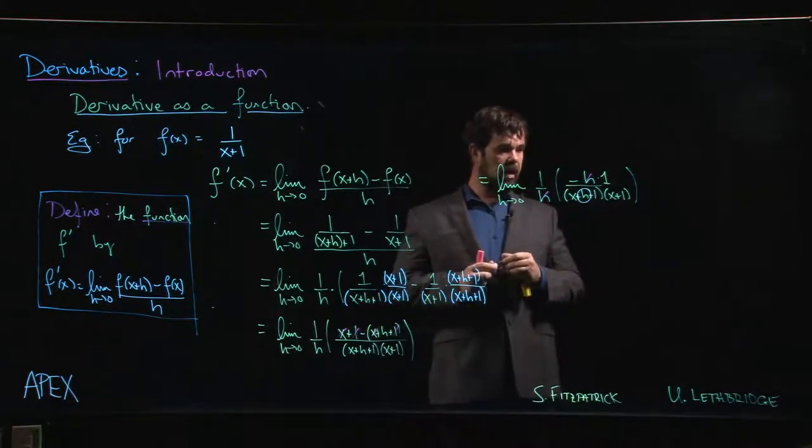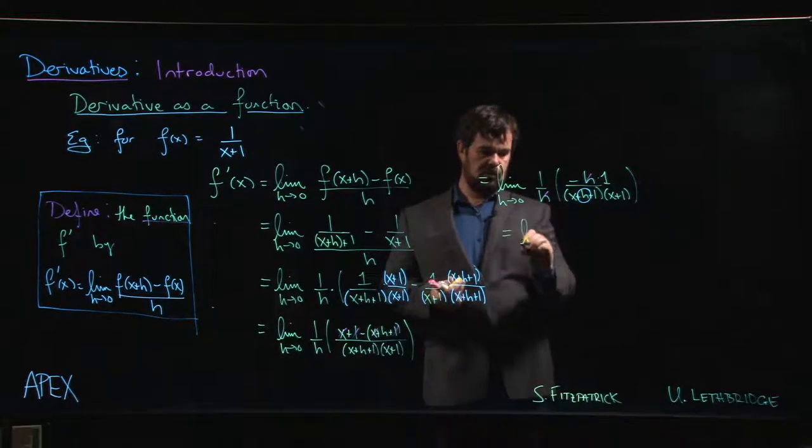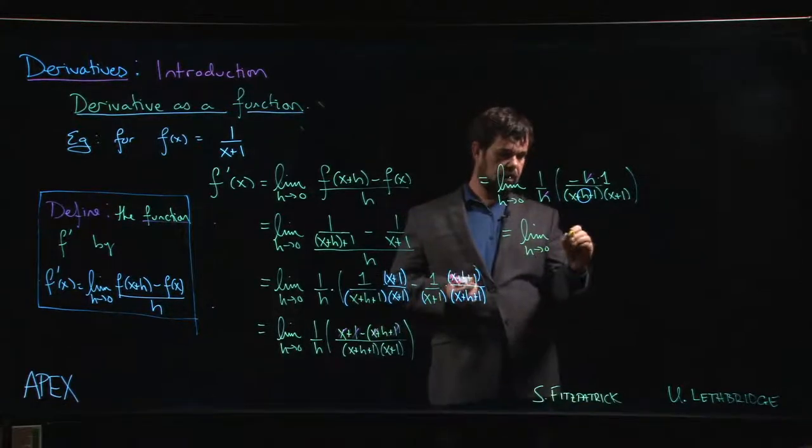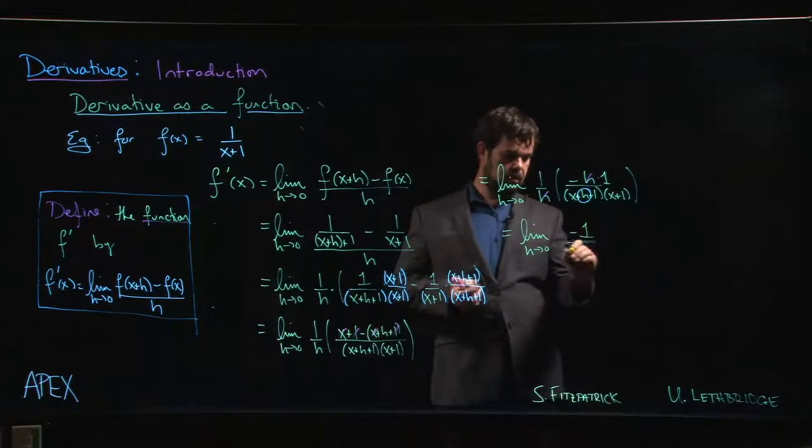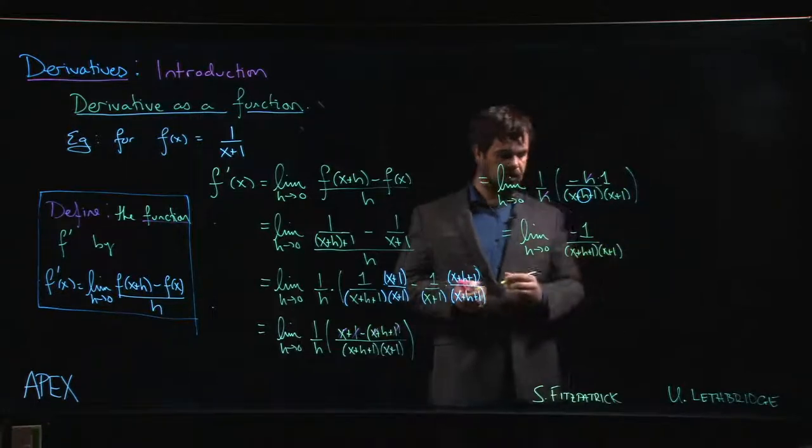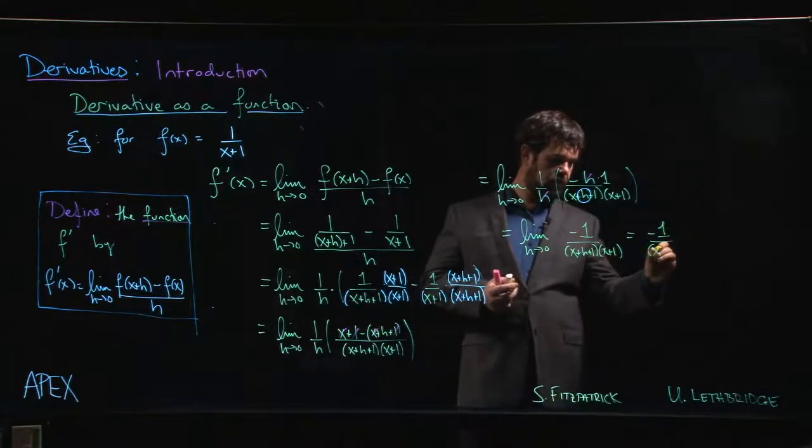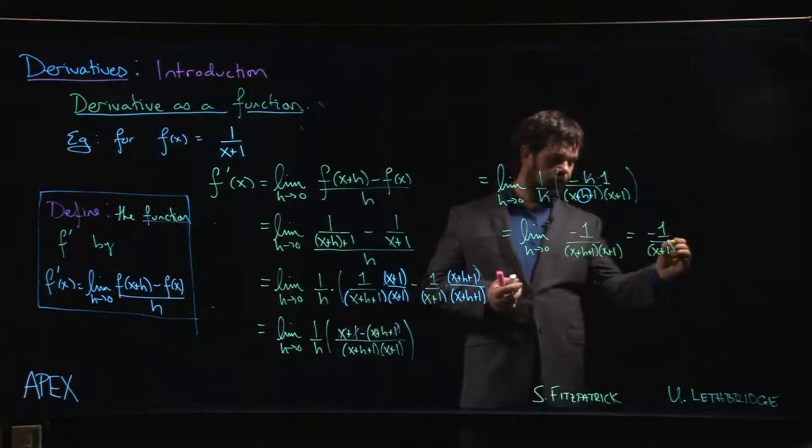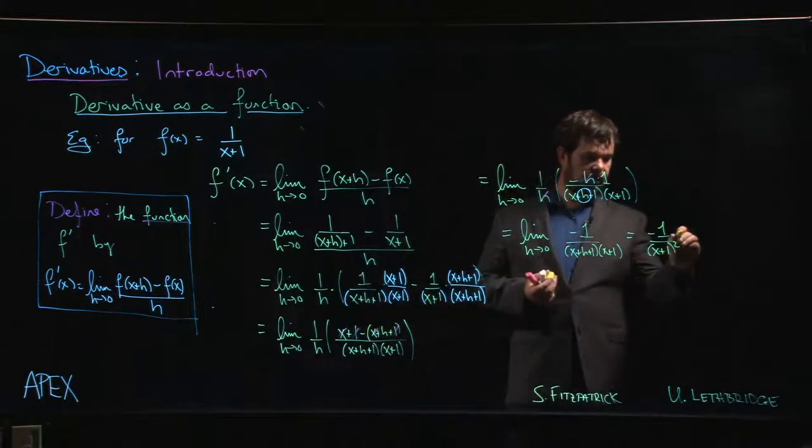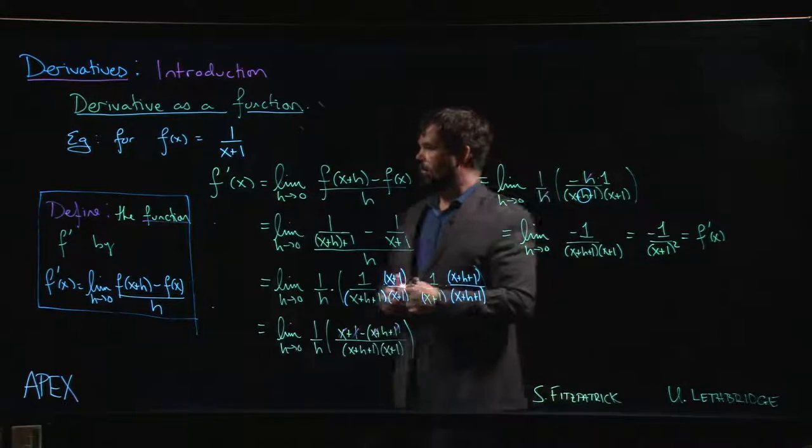Now that those h's are gone, we check and we see the only remaining h is this one here. There's nothing stopping us from letting that h go to zero. In fact, let me write the limit symbol. We let h go to zero: minus 1 over x plus 1 times x plus 1, so x plus 1 squared. And you're done. So this is f prime of x for the function f of x equals 1 over x plus 1.